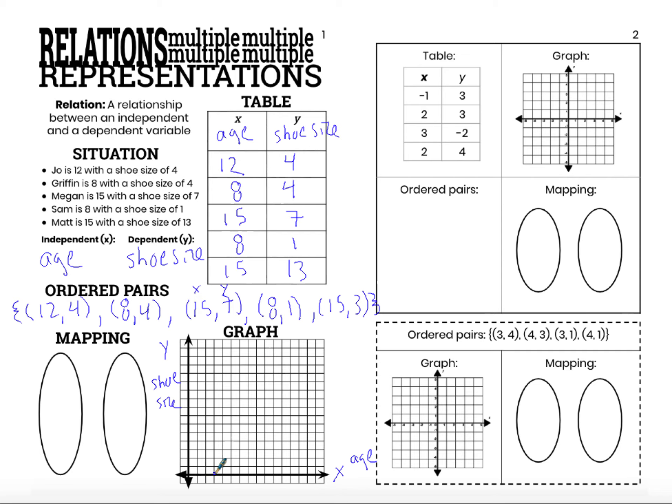So 1, 2, 3, 4, 5, 6, 7, 8, 9, 10, 11, 12. My X is 12. My Y is 4. 1, 2, 3, 4. That particular ordered pair, that point, represents Joe.